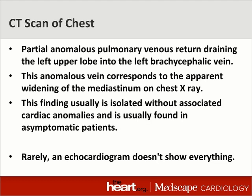Before we had a chance to figure that out, the referring cardiologist had already done a CT scan of the chest, and this is what it showed: there was partial anomalous pulmonary vein drainage returning to the right side of the heart. This was not a standard pulmonary vein — not one of the big four that come into the left atrium — but just one segment of the left upper lobe of the lung had a pulmonary vein draining into the left brachiocephalic vein. That anomaly was the reason the chest X-ray looked abnormal. The radiologists commented that this is usually an isolated finding without associated cardiac anomalies and usually found in asymptomatic patients. I had never heard of this, so I figured I should show it because probably many of you haven't heard of this either.